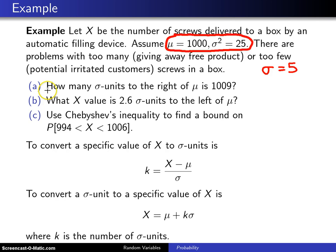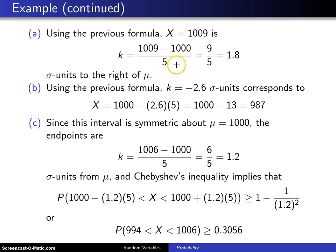So at this point we're going to answer parts A, B, and C. The first part is how many sigma units to the right of mu is 1009. Go ahead and draw a picture here. We know that the center of the distribution is at 1000.